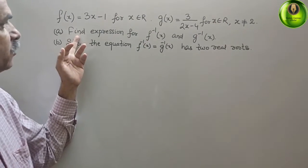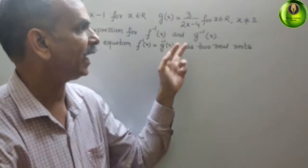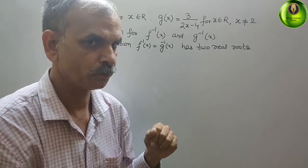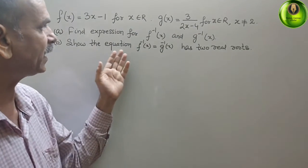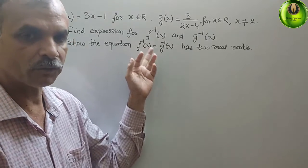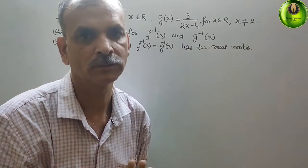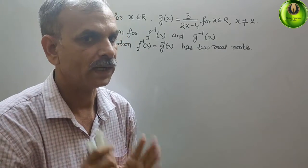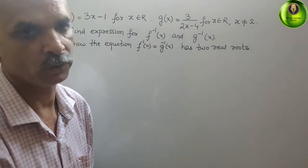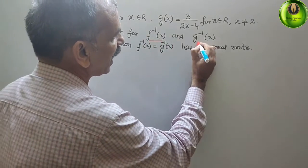Find the expression for f inverse of x and g inverse of x, and secondly show that the equation f inverse of x equals g inverse of x has two real roots. Now understand what they have told. First we have to find out f inverse and g inverse.